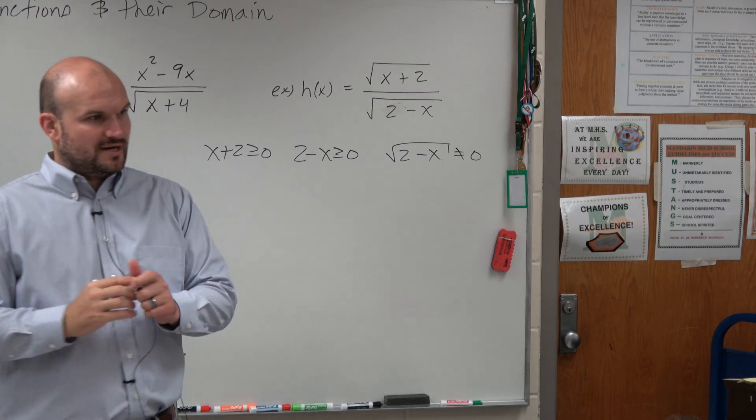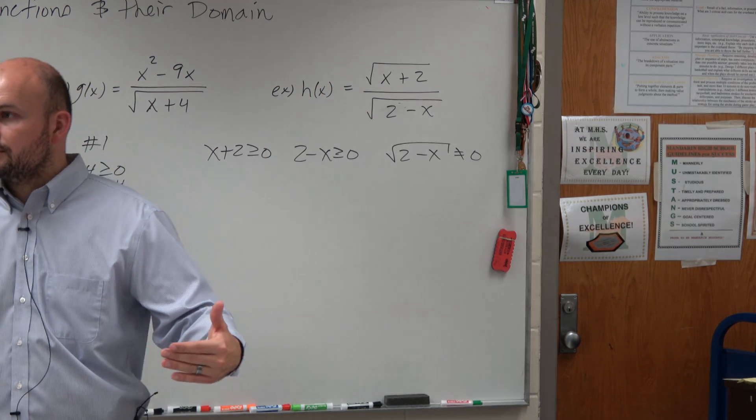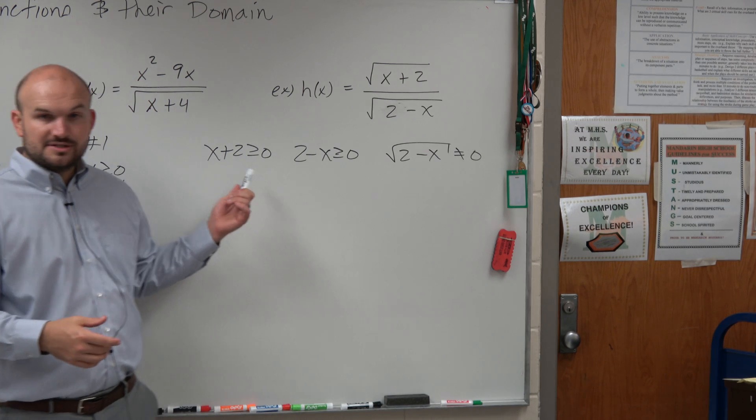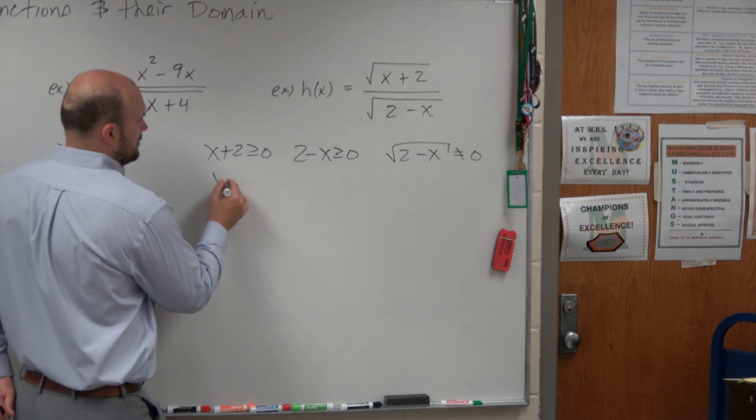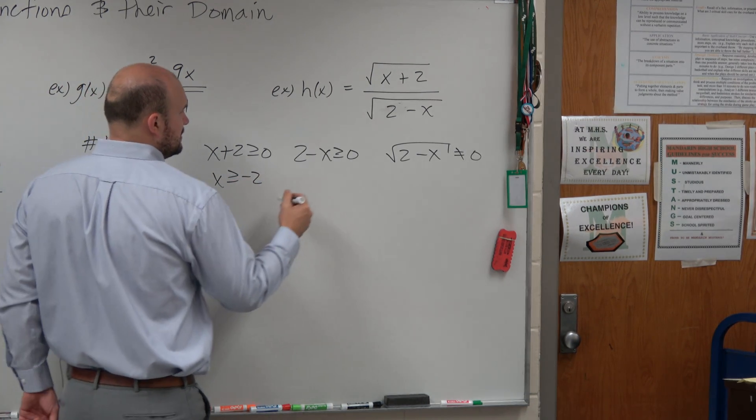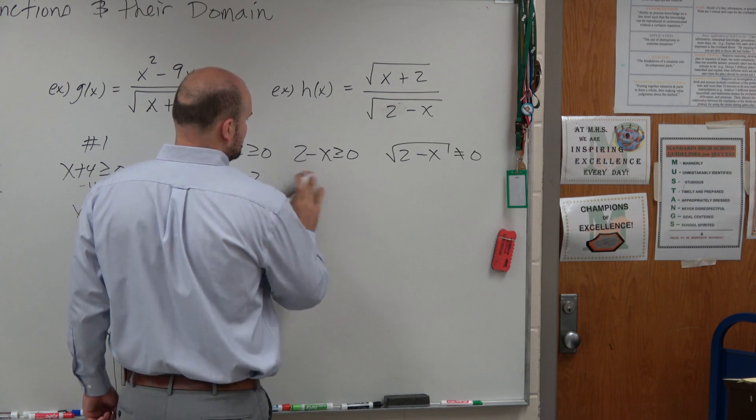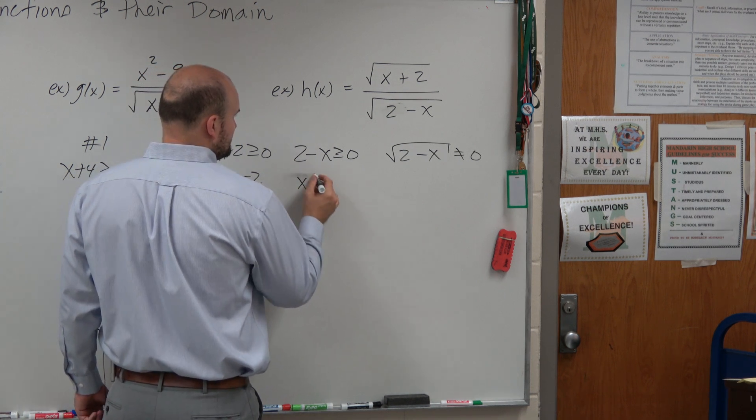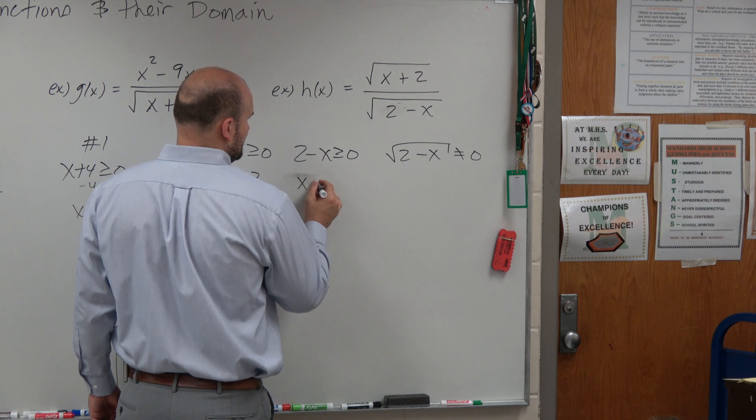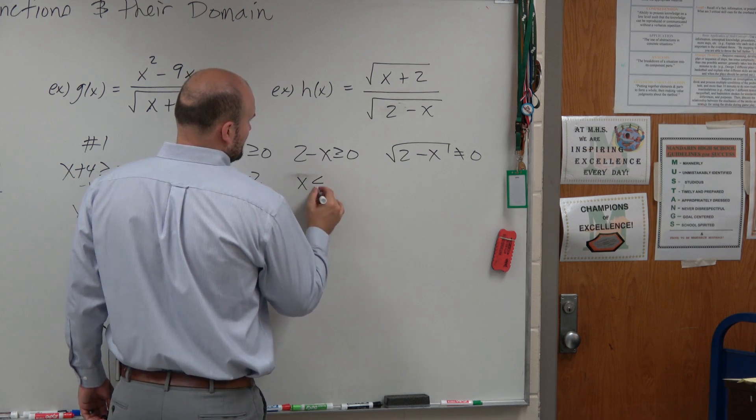So do you guys see how this one I included all three kind of constraints? You guys can see them? And now we just do kind of each one separately. X has to be greater than or equal to negative 2, x has to be, this would be x is going to be less than or equal to 2,